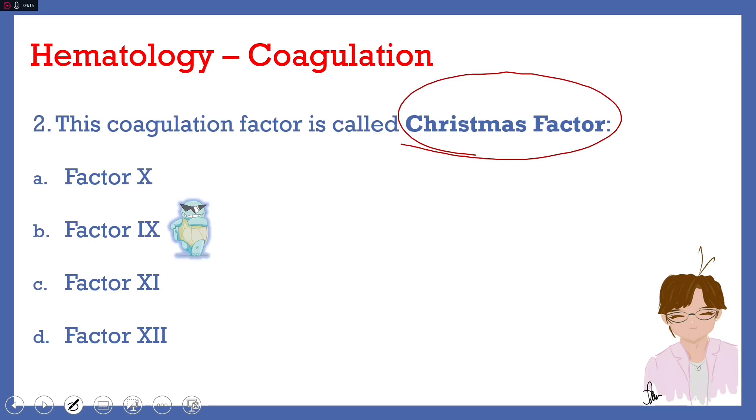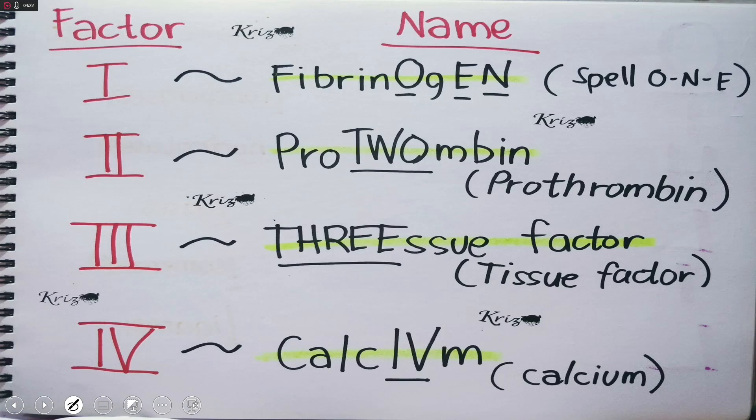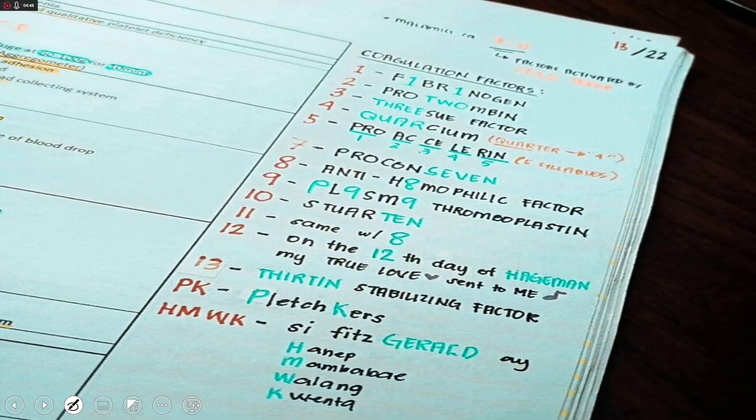The other names for the coagulation factors may be remembered by using the following mnemonics. Factor 1, using O-N-E in its spelling, you can remember fibrinogen. Factor 2, pro-2-bin. Factor 3, Thrixu factor. And factor 4, calcium, using the Roman numeral symbol for number 4, INV. The next picture you're seeing is from a student who shared this mnemonic. You can look for this picture on Facebook using the hashtag MgaWalangPwentangMnemonics.